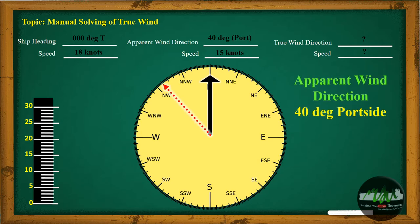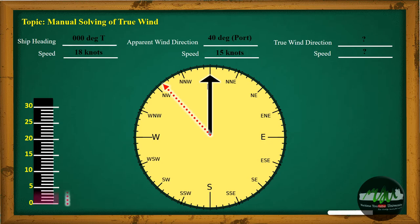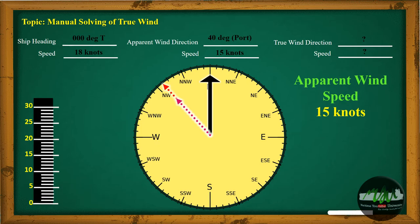This is the apparent wind direction, 40 degrees portside. This is the apparent wind speed, 15 knots.